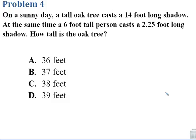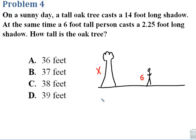Problem 4 says on a sunny day, a tall oak tree casts a 14-foot-long shadow. At the same time, a 6-foot-tall person casts a 2.25-foot-long shadow. We want to know how tall is the oak tree. Let's sketch this out. We have an oak tree and a person. We know the person is 6 feet tall, and we're not sure how high the oak tree is. That's what we want to solve for. We know they both cast a shadow. The oak tree's shadow is 14 feet, and the person's shadow is 2.25 feet.